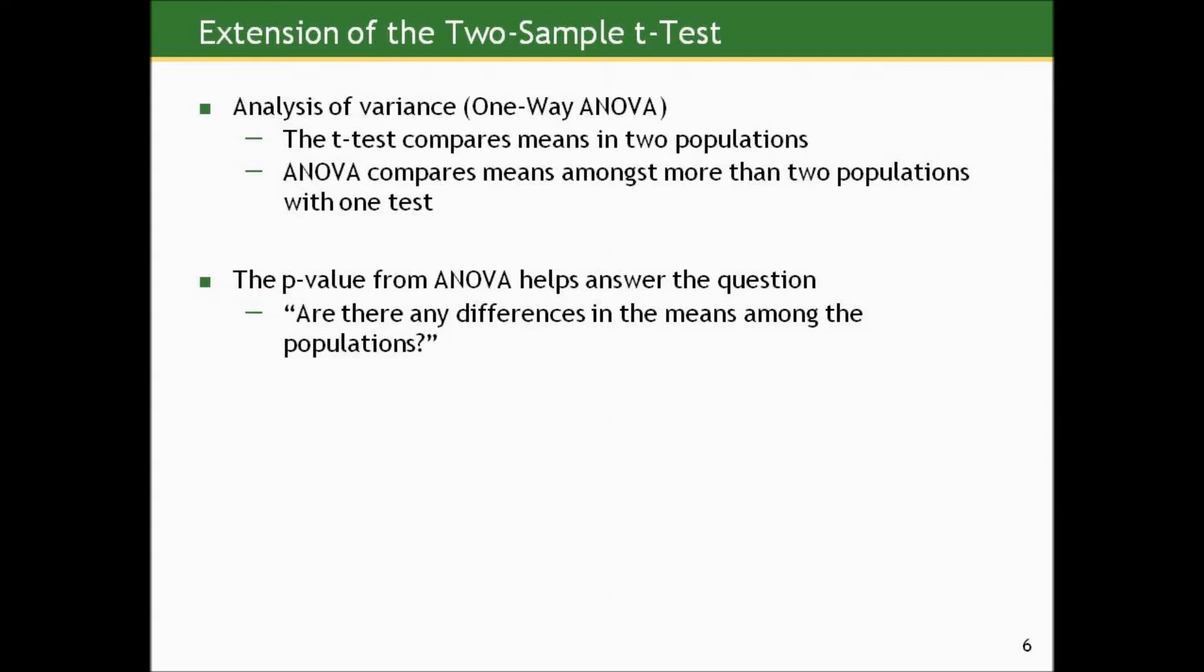There actually is a catch-all test, something called analysis of variance, or one-way ANOVA. ANOVA is just the acronym for analysis of variance. ANOVA is just an extension of the two-sample t-test. The two-sample t-test compares the means in two populations through two samples from those populations. ANOVA compares means among more than two populations with one test.